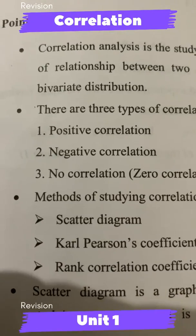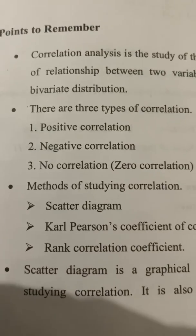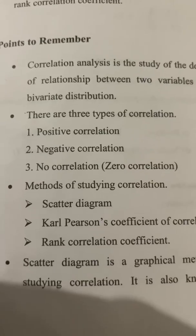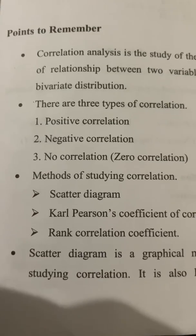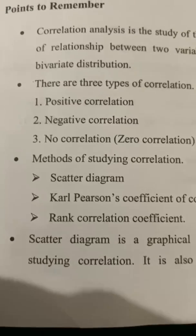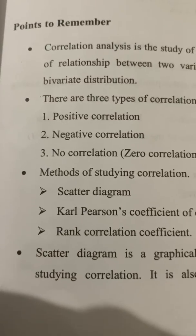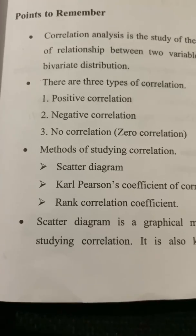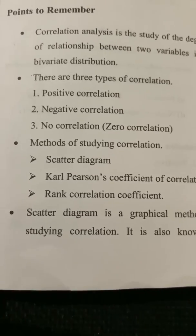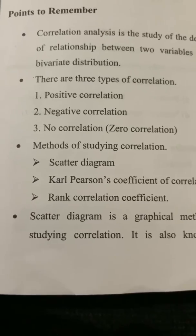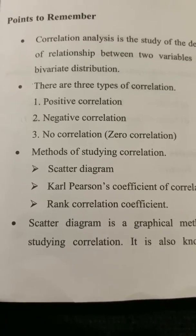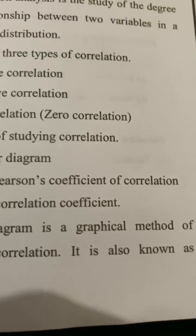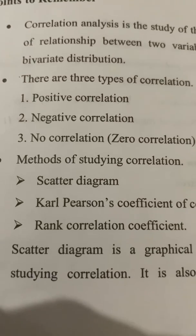The three types are: positive correlation, negative correlation, and no correlation. The methods of studying correlation are: one, scatter diagram; two, Karl Pearson correlation coefficients; and three, rank correlation coefficients.